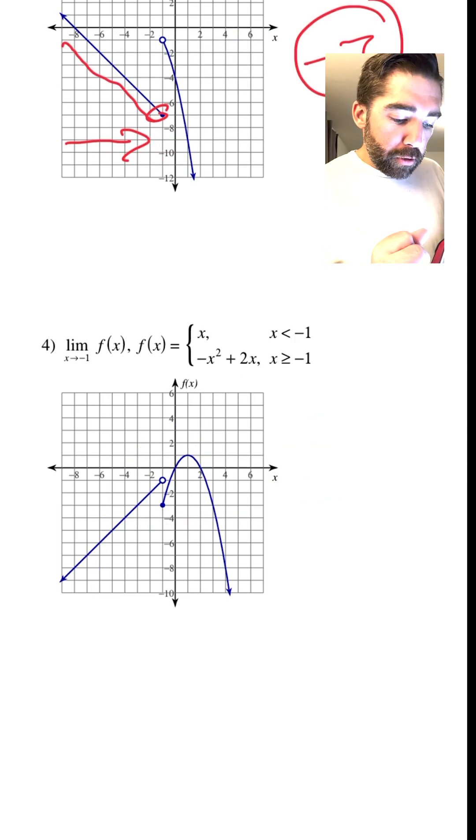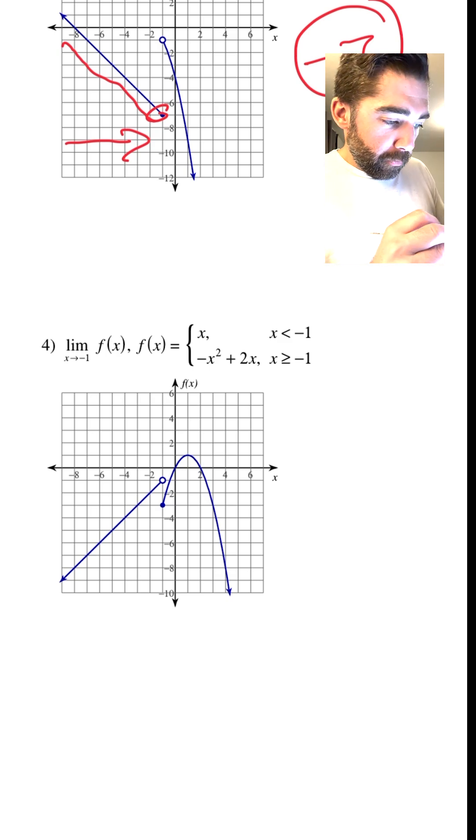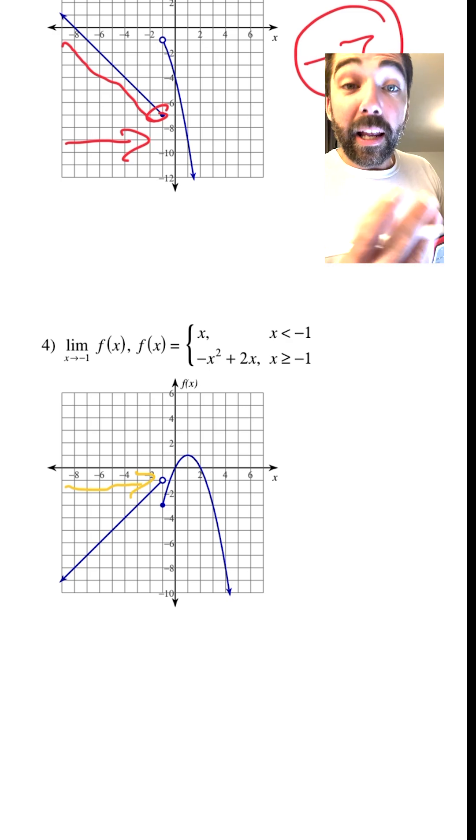Okay, how about this one? Are we approaching the same location? So the limit of the function as x approaches negative 1. So as we approach negative 1 from this side, we're landing at negative 1.